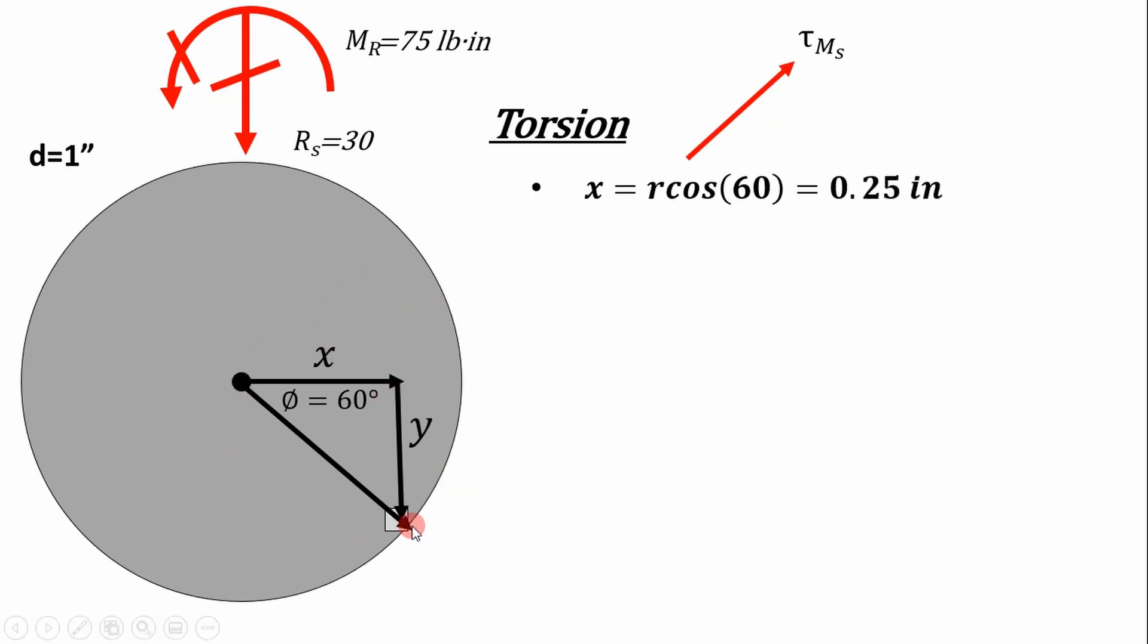So if we look at this, for the torsion example, our x distance to the stress element is going to be the radius times the cosine of 60 degrees, as you can see by this triangle. Your distance in the y direction to the stress element is going to be the sine of 60. So if you remember SOHCAHTOA, you can do that.